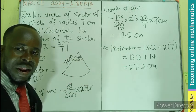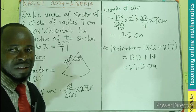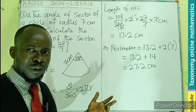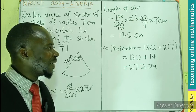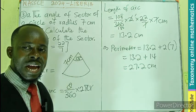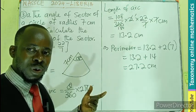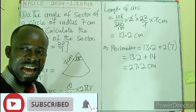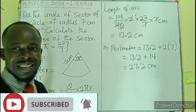So the perimeter of the sector that has an angle of 108 degrees with a radius of 7 is 27.2 centimeters. I'm sure you followed through with me. If you have a question, feel free to ask in the comment section. Subscribe if you have not, like the video, and comment.